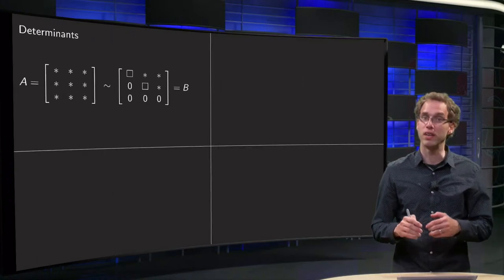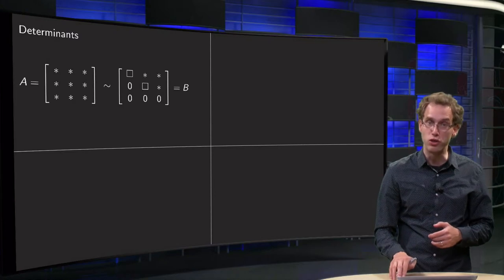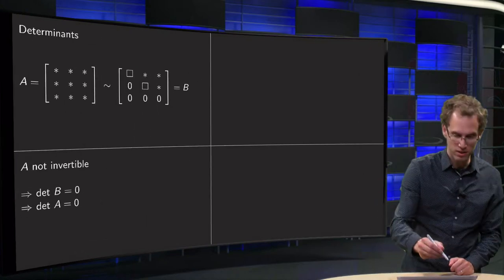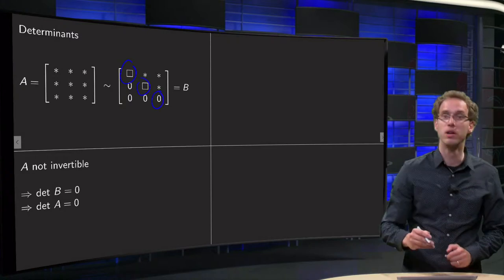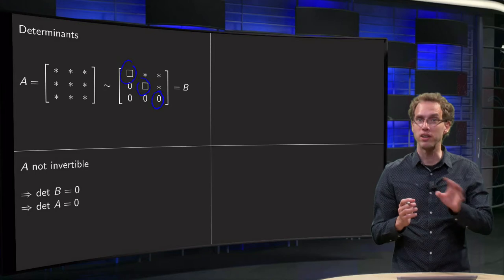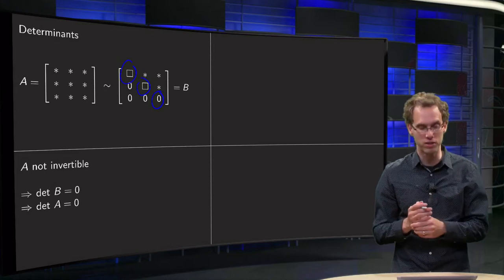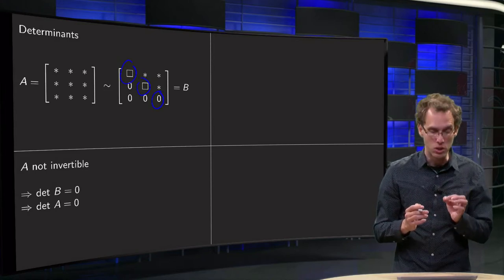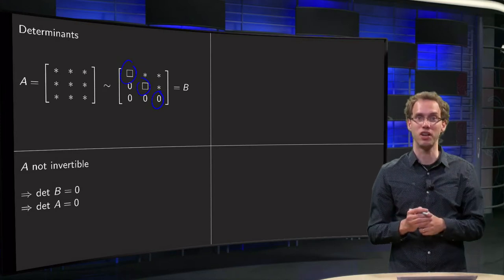Then we observe that if we compute the determinant of B, we get number times number times 0. So the determinant of B equals 0. It doesn't matter what the numbers are because you multiply by 0. So A is not invertible, which means that the determinant of B equals 0.